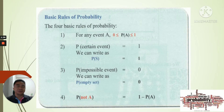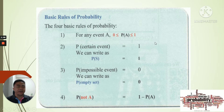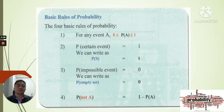These are the basic rules that we need to follow to figure out probability. We have four basic rules. Number one: for any event A, the value of the probability is greater than or equal to 0 but less than or equal to 1. So it cannot be negative, nor can it be more than 1. It will go only within that range.